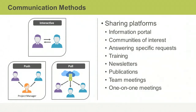In pull communication, recipients access the communication content at their own discretion. As such, you won't know if the information has been accessed or if it has been understood. Methods of pull communication include intranet sites, e-learning resources, project websites, and knowledge bases. Information can be shared through various platforms, including portals, information portals, or secured web pages, depending on the sensitivity of the information. Sharing can be internal through wiki pages or through communities of interest, internal or external to the organization. Specific requests can also trigger sharing.